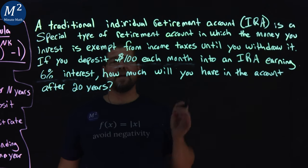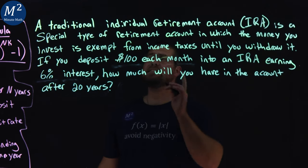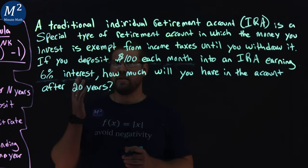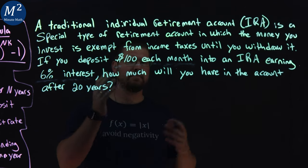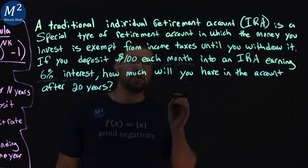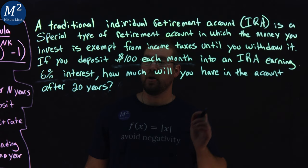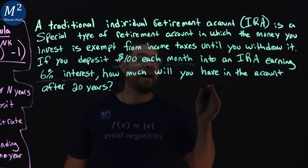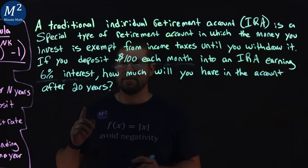A traditional individual retirement account, an IRA, is a special type of retirement account in which the money you invest is exempt from income taxes until you withdraw it. If you deposit $100 each month into an IRA earning 6% interest, how much will you have in the account after 20 years?